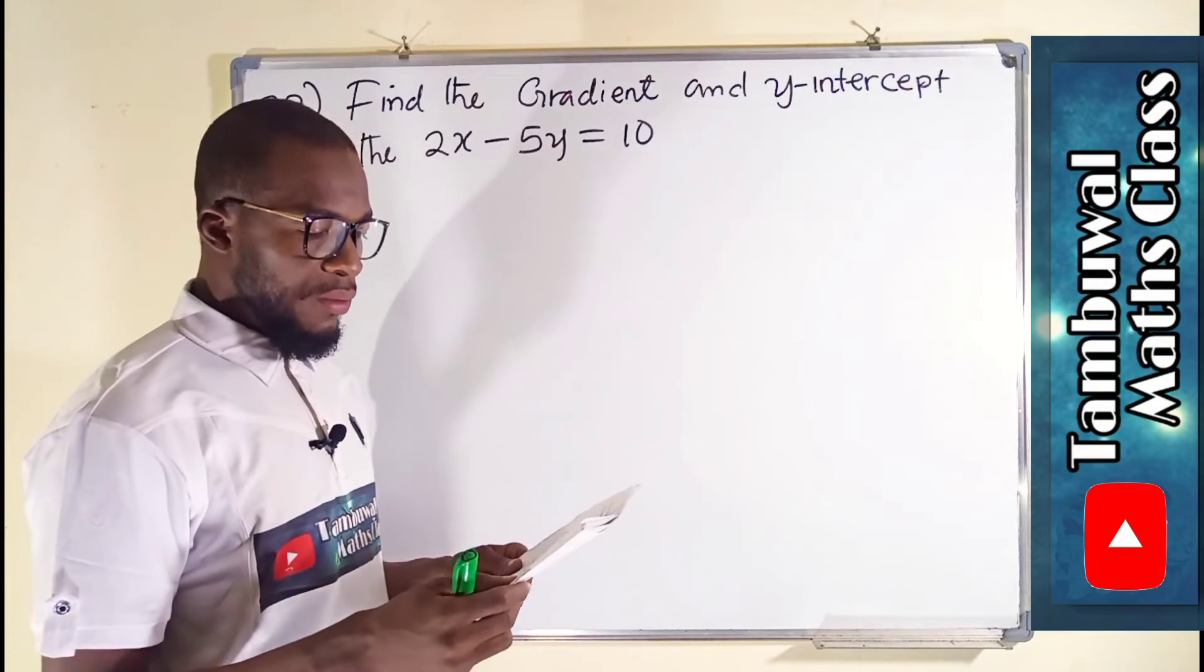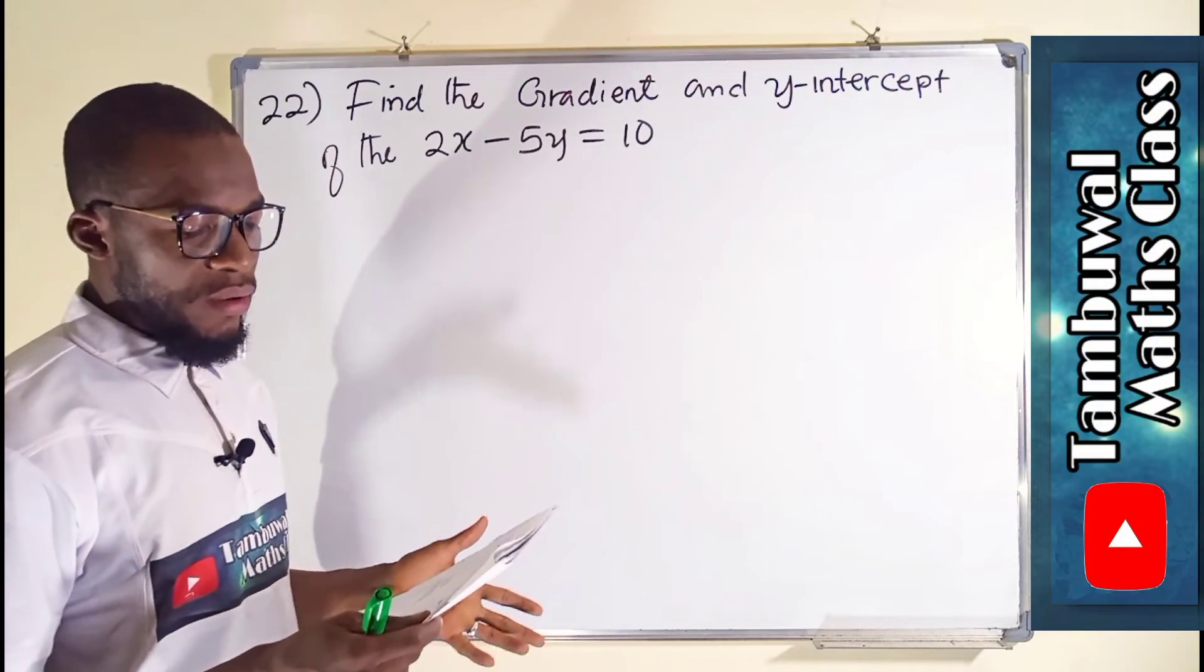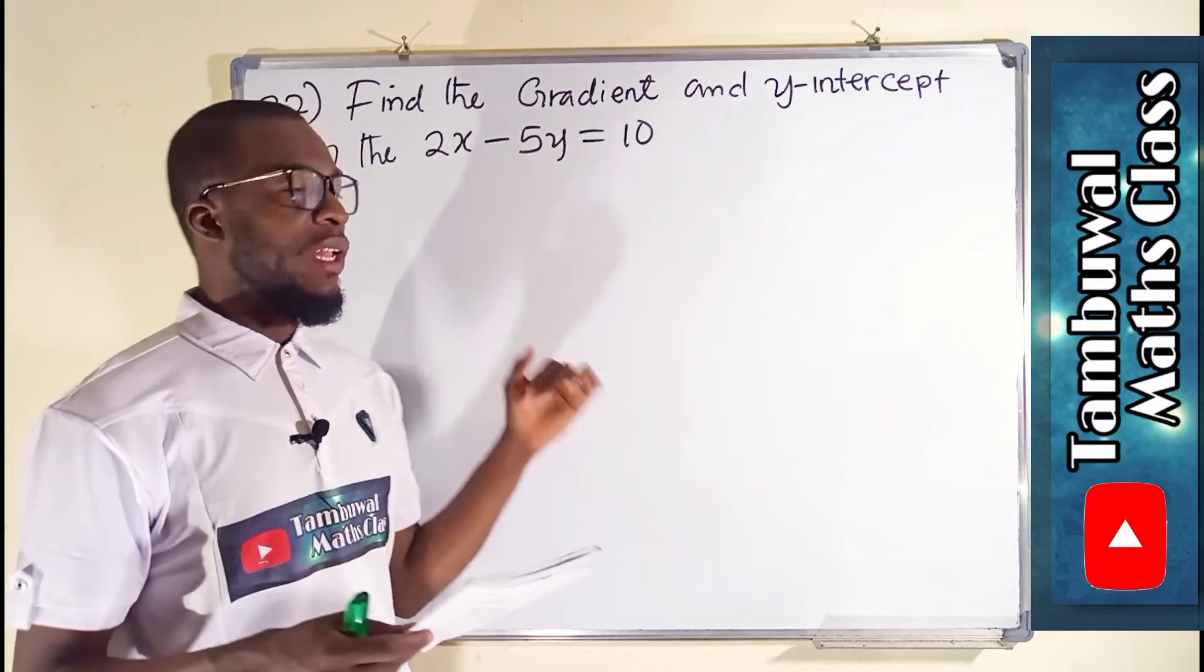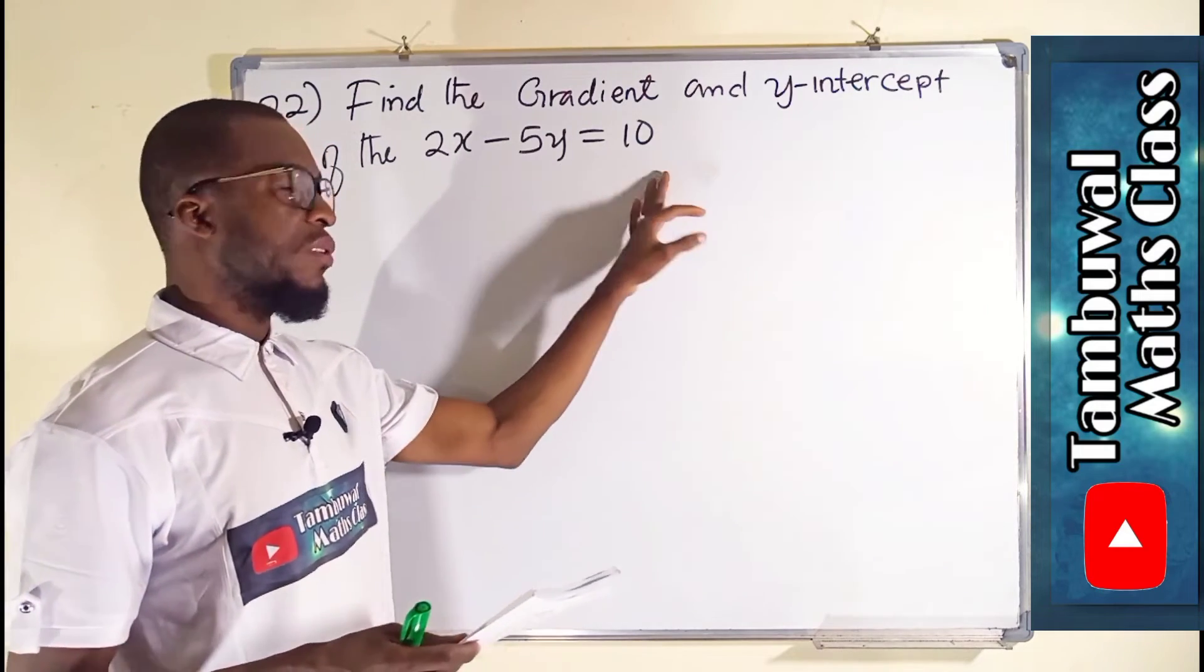Question number 22 says, find a gradient and y-intercept of the line 2x minus 5y equals 10.